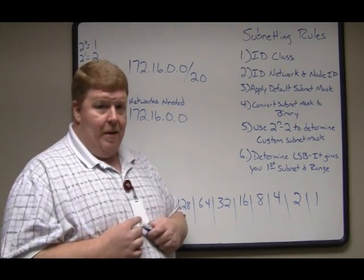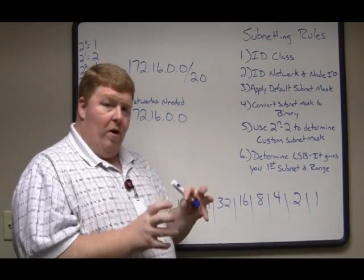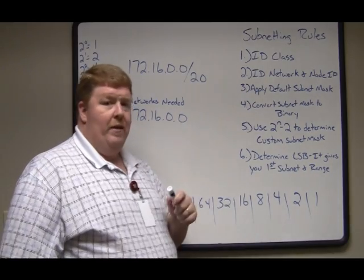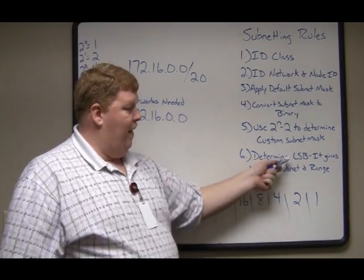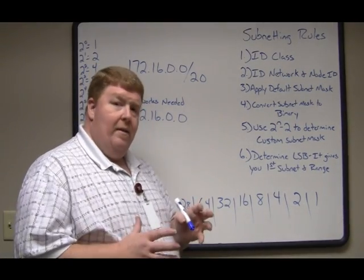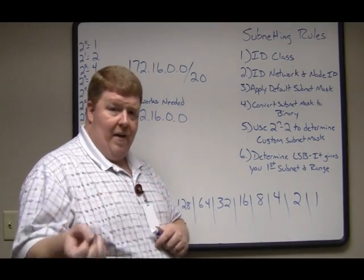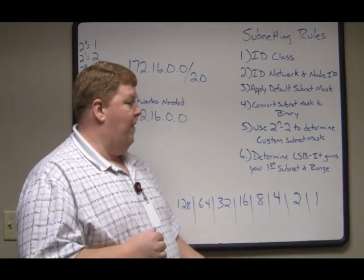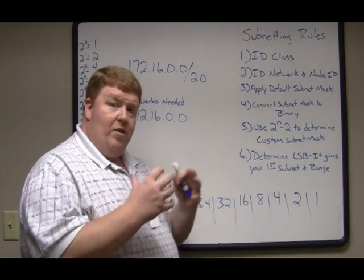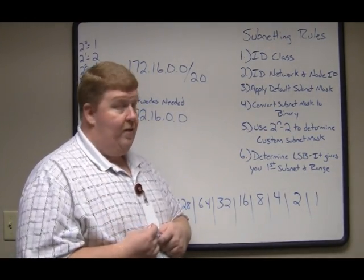Step 6: once you have the custom subnet mask, determine the LSB — the least significant bit. The least significant bit is the bit in the octet you're changing — the smallest bit that still has a one in it. Believe it or not, the least significant bit is the key to your subnetting: it determines your ranges and tells you where your subnets begin and end. Once you get that LSB, everything else falls into place.